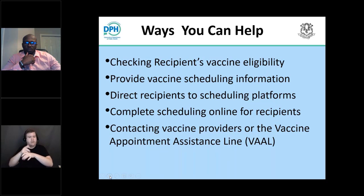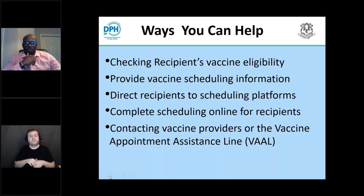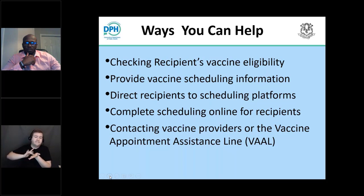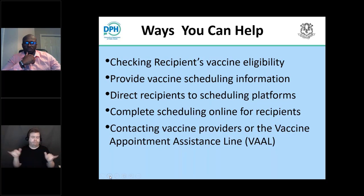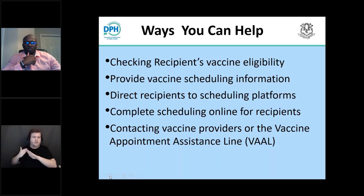Throughout this presentation, you will see references to various websites that will help you and provide you with the tools you'll need to help folks. Another important way you will be assisting recipients is to give them information on the ways in which they can schedule a vaccine appointment, be it through a vaccine partner such as a pharmacy or a hospital group, or through the Vaccination Administration Management System or VAMS. Be aware that there are needs of diverse communities within Connecticut and we want to provide equitable access to vaccination. This may include providing interpretation or translation services or other means to communicate.